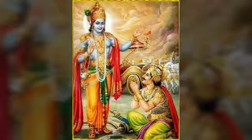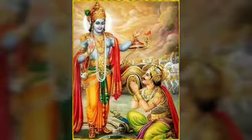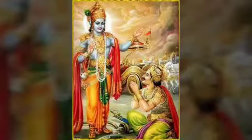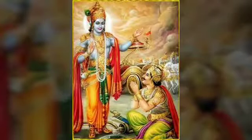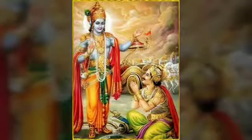Bhagavan has explained all of those in this chapter. We have seen up to the 25th shlokam. In the first 22 shlokams, Bhagavan explained the categorizations of all of these. From the 23rd shlokam, he started explaining that all of these are Vaidika karmas performed as part of Vaidika rituals. Such rituals should be accompanied by Om, Tat, Sat — these three words must be recited. In the 24th and 25th shlokams, Bhagavan explained Om and Tat. Now from the 26th shlokam, he will explain the word Sat, and the concluding 28th shlokam. Let us see that today.